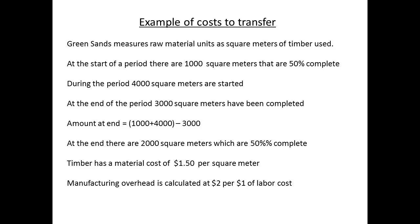We will now work through an example to show how the calculations are carried out. Green Sands needs to have a measurement for units, and they have determined that most items use about a square metre of timber, used as the unit measurement. Anything in process is regarded as 50% complete — a simplified calculation, since any particular item can be between 1% and 99% partially completed. At the start, there are 1,000 square metres treated as 50% complete. 4,000 square metres are started during the period, and 3,000 square metres are completed. The raw material cost is $1.50 per square metre of timber, and manufacturing overhead is calculated on the basis of $2 for every dollar of labour cost. At the end of the period, there are 2,000 square metres that are partially complete.